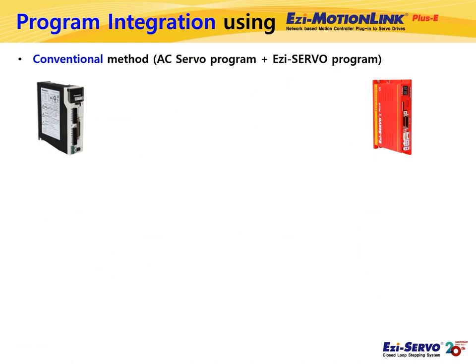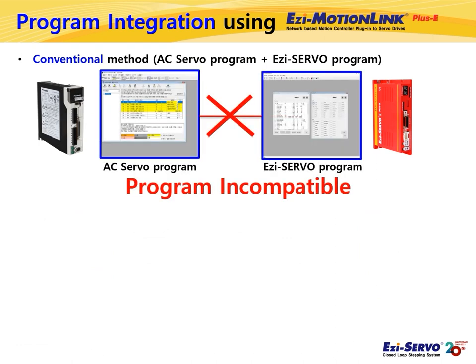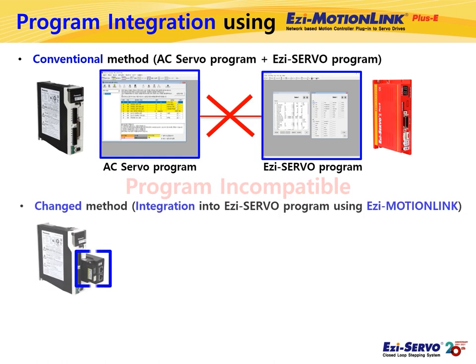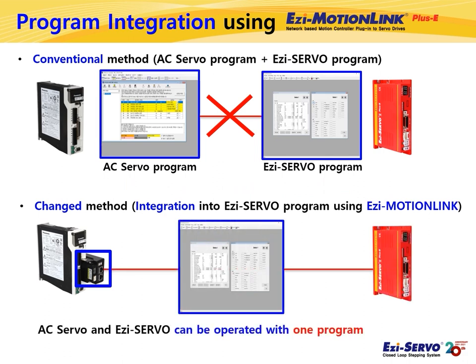Two different software environments were required to control 10-axis of Easy Servo and 5-axis of AC servo. But if the customer uses Easy Motion Link, 5-axis AC servo can be used in the same Ethernet network and software environment using the API of Easy Servo. In other words, a total of 15 axes can be operated with one program.